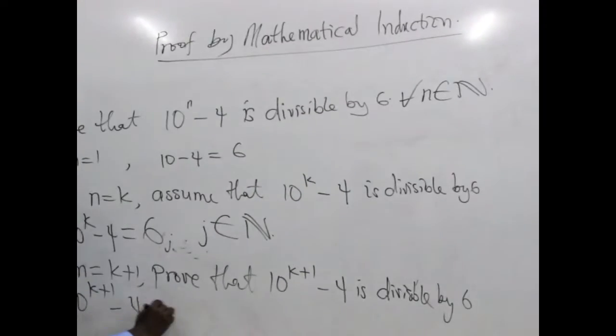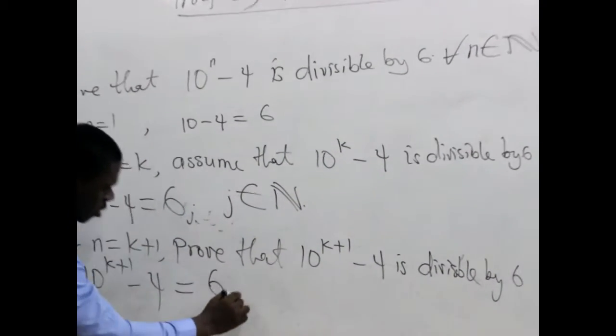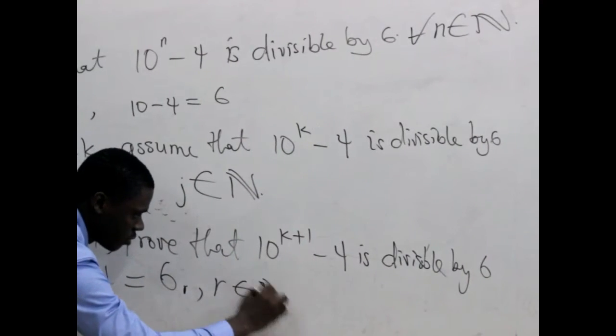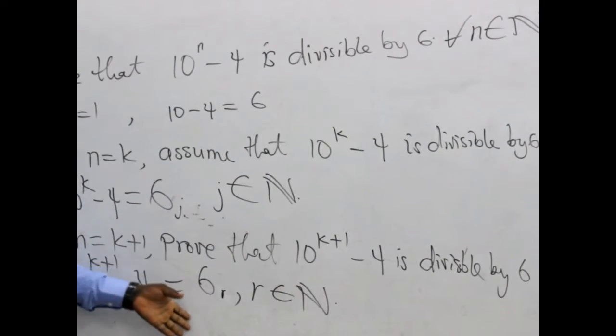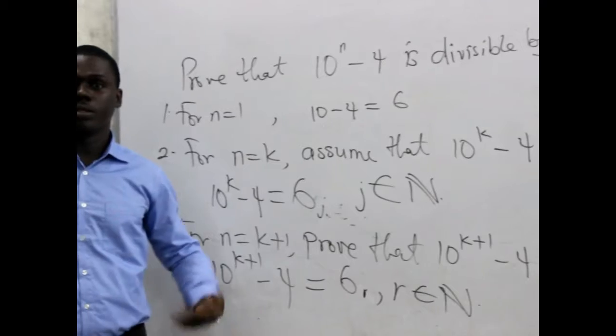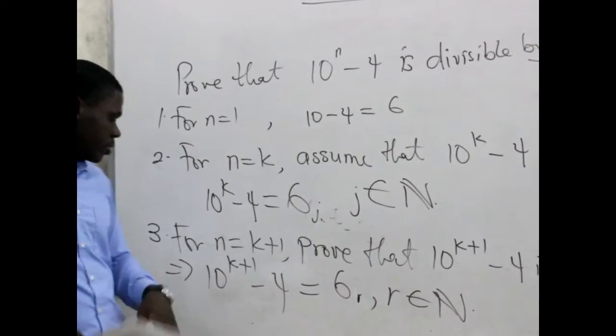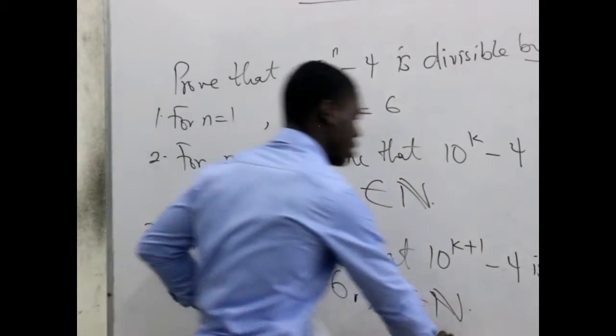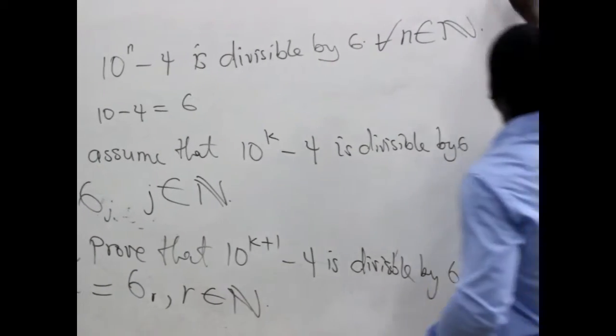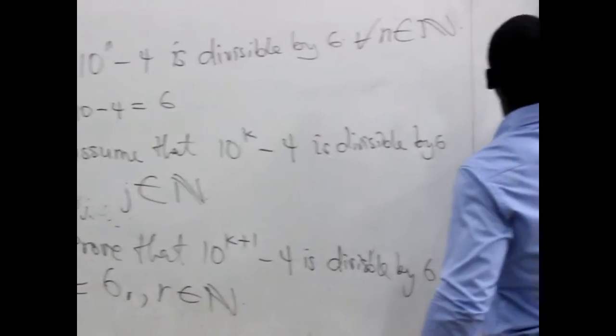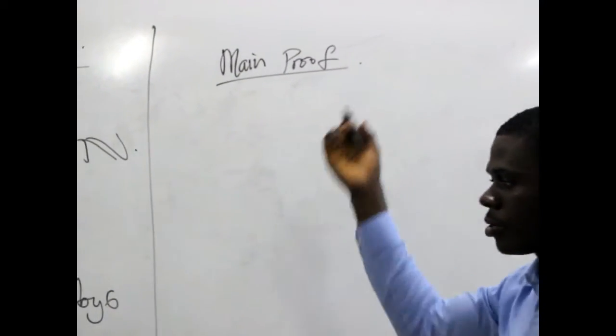It is divisible by 6, or in other words you can say that 10^(k+1) minus 4 is equal to 6r, where r belongs to the set of natural numbers. As I said earlier, if it is actually divisible by 6 then we can multiply it by any number and any number multiplied by 6 is divisible by 6.